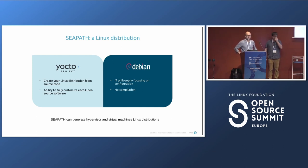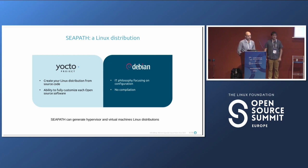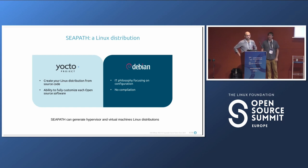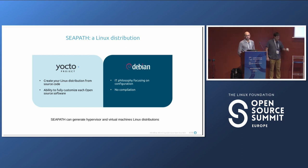We have two flavors of C-Pass: the first is based on Yocto, the second on Debian. With Yocto you can create your own Linux distribution from source code and customize everything yourself — good for cybersecurity and performance. With Debian you follow the IT philosophy: you only configure and use pre-built packages rather than compiling.